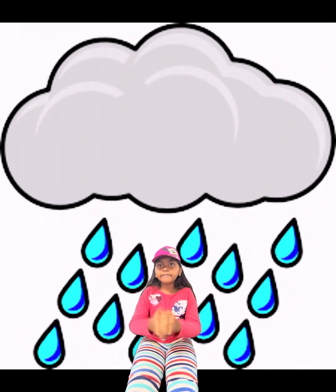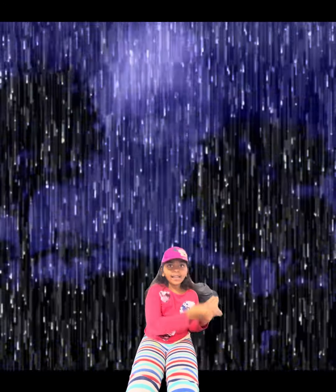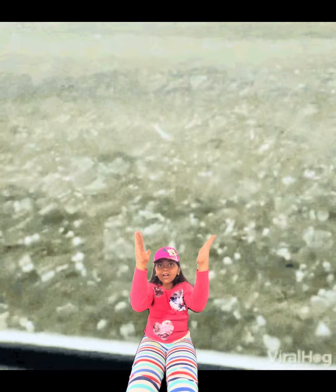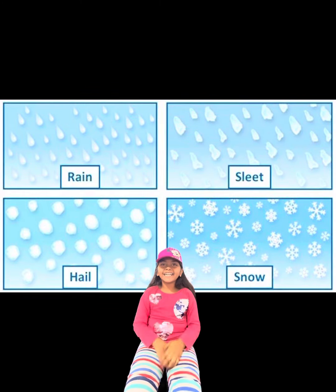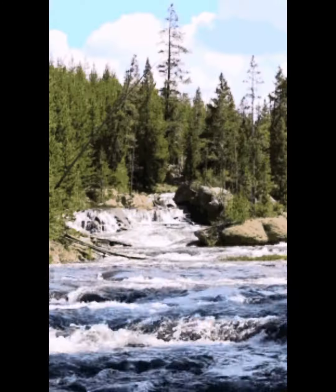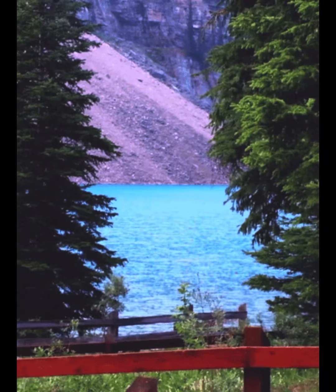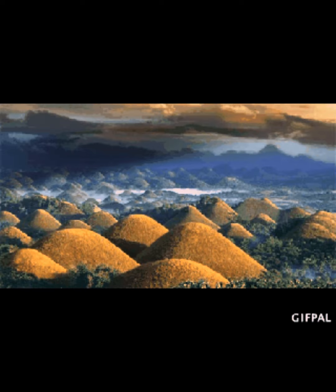Once the clouds gather enough water, they become heavy and release it as rain, hailstorms, or snow — this is called precipitation. This water then collects in seas, rivers, ponds, and lakes. Sometimes plants release water too, which is called transpiration.